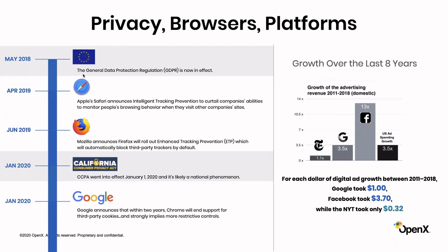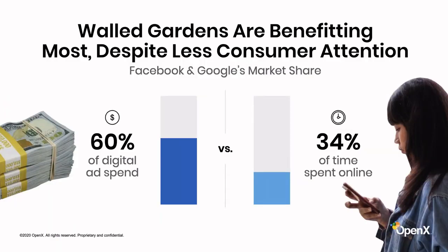There is still a great imbalance between the share of consumer attention the open web enjoys versus the platforms, and a great disparity between that attention and how money gets spent on advertising. We persistently believe that a lot of that fault is because of how ad tech is structured — the complexity of it, the tax we all pay with many partners, many handshakes, a whole lot of degradation — when a partner like Facebook has really put all of those problems in a box and made them easier to consume for a buyer.